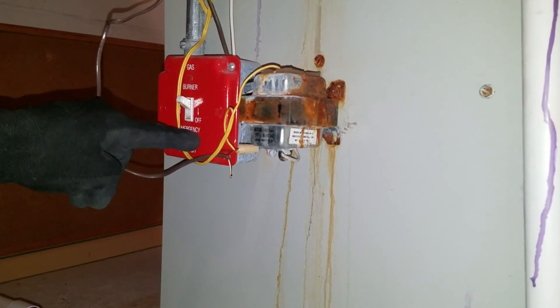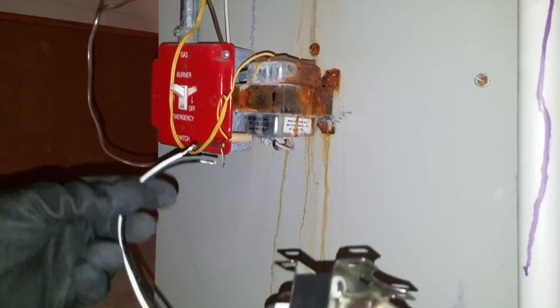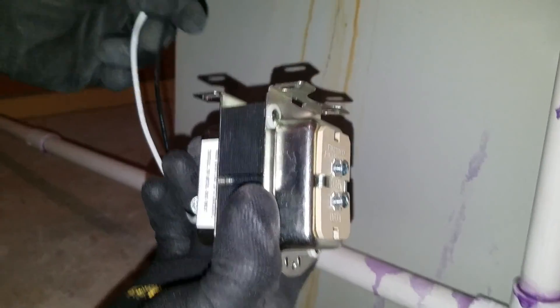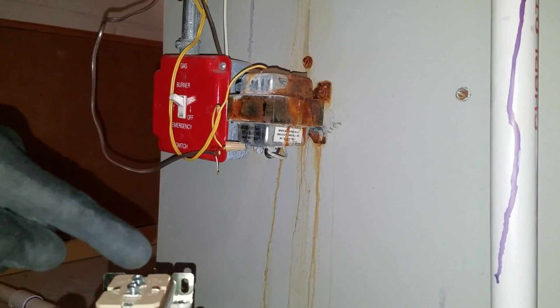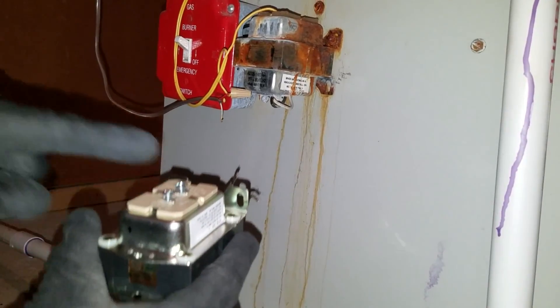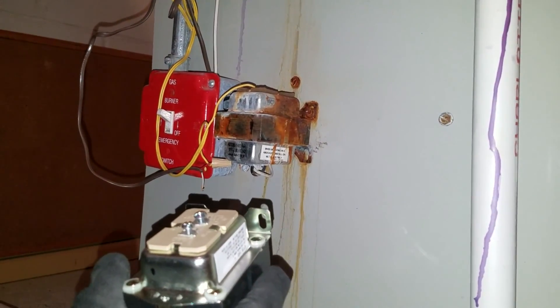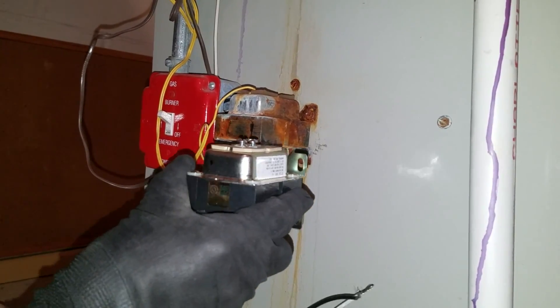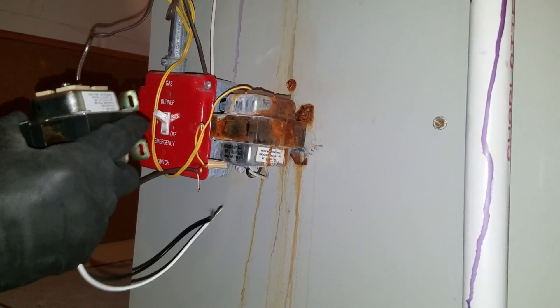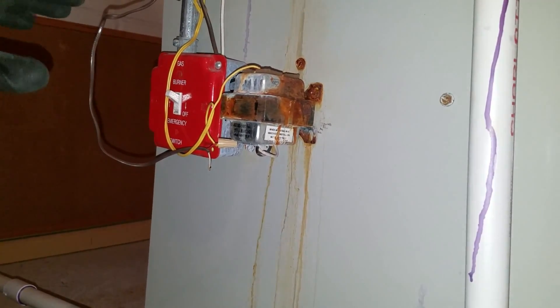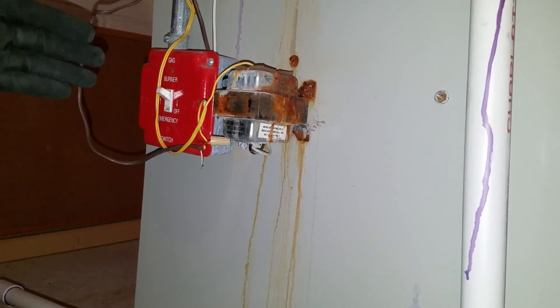Let me remove this faceplate of the gas burner emergency switch and hook up these two wires—one is hot and one is neutral—inside this one. Then I'll remove this wire and connect it to the load, and then we are done basically. It's pretty straightforward, so let me remove this gas burner faceplate and I'll show you how exactly it is hooked up inside.